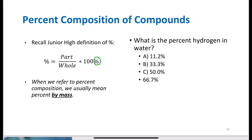We're going to do something similar with compounds to figure out the percent composition. The difference is that whereas I just counted students wearing a specific colored shirt, in chemistry percent composition means percent by mass — how much of my compound is made up by the mass of a specific element. One atom of hydrogen is 1.008 AMU, whereas one atom of oxygen is 16 AMU. They have different numbers of protons, neutrons, and electrons, so they vary in their mass. I cannot compare by count; I have to compare by mass.